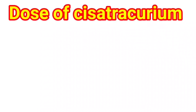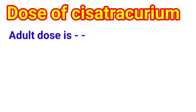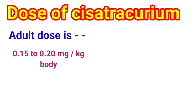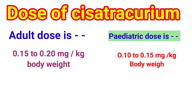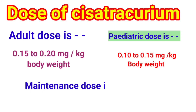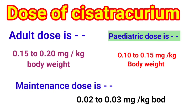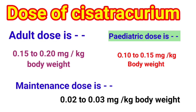Dose of Cisatracurium — Adult doses: 0.15–0.20 mg per kg body weight. Pediatric doses: 0.10–0.15 mg per kg body weight. Maintenance doses: 0.02–0.03 mg per kg body weight.